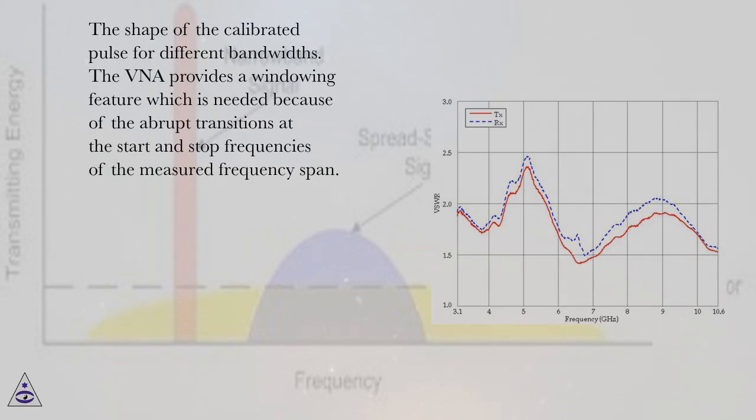The shape of the calibrated pulse for different bandwidths. The VNA provides a windowing feature which is needed because of the abrupt transitions at the start and stop frequencies of the measured frequency span.